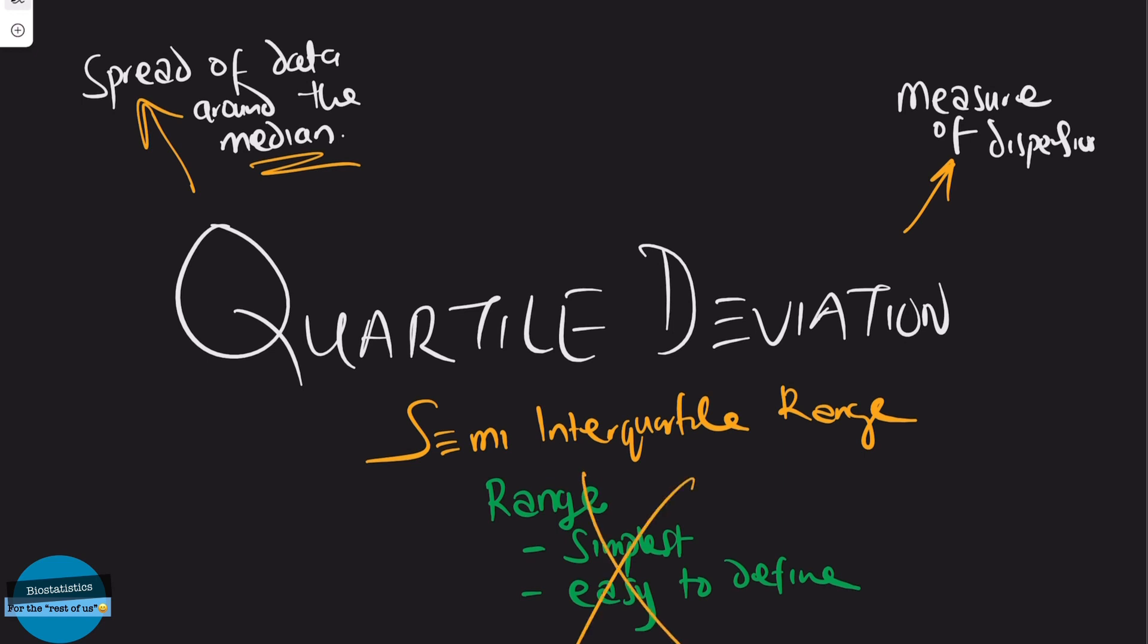In this video, you will see why the quartile deviation is a better measure of dispersion.